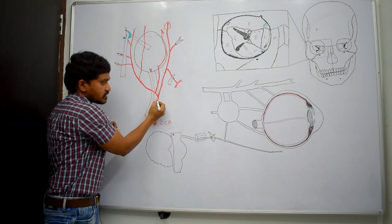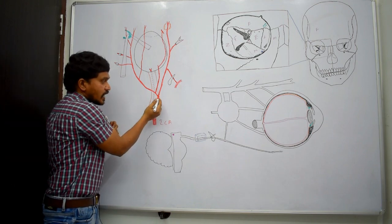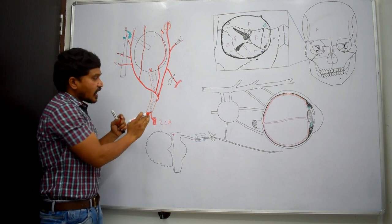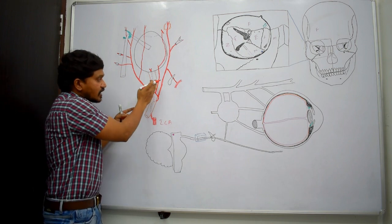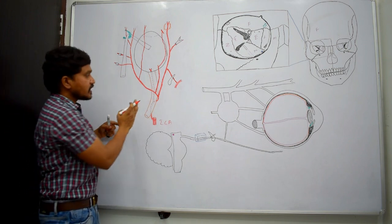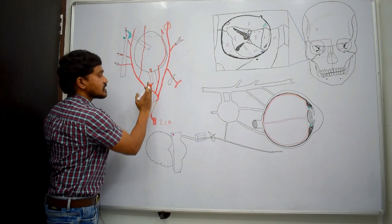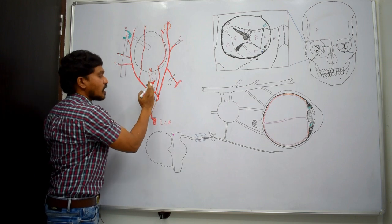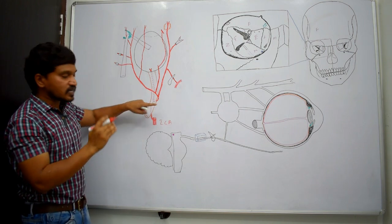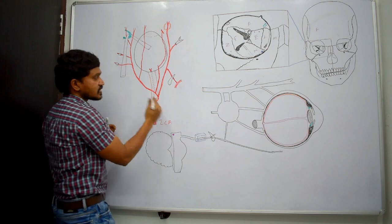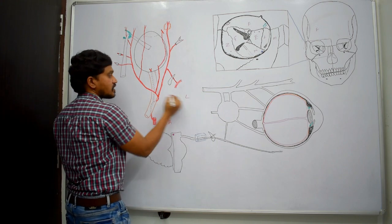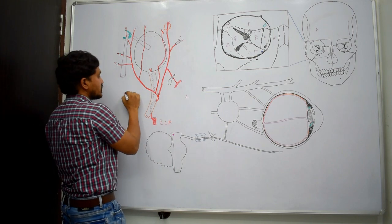After passing some distance, it pierces the dura mater along the lateral part of the optic nerve. Then it ascends up along the lateral part of the optic nerve. Then it crosses the optic nerve from lateral to medial side.